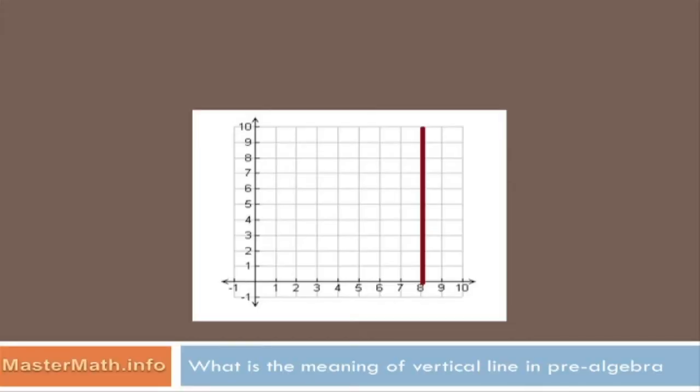Well, what is the meaning of a vertical line? Well, I've got a vertical line graphed here, and you can see a couple of interesting things. Obviously, that vertical line runs up and down. It runs vertically, and this is my y-axis. This is my x-axis,